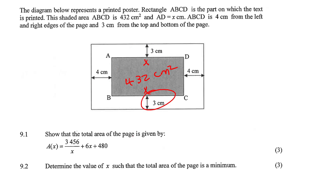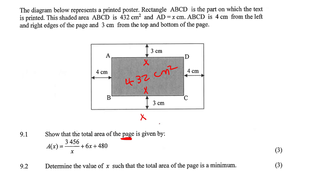Show that the total area of the page — I think they mean the whole page. Okay, so that means that this length would be X plus 8. Why not X plus 4? Well, it's X and then you've got 4 and 4, so that's 8.